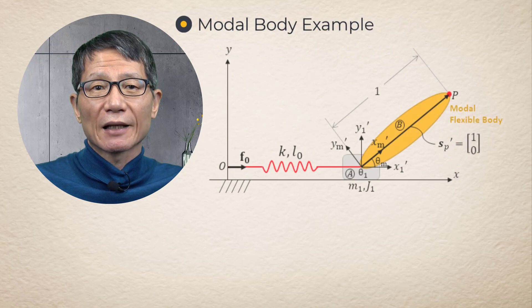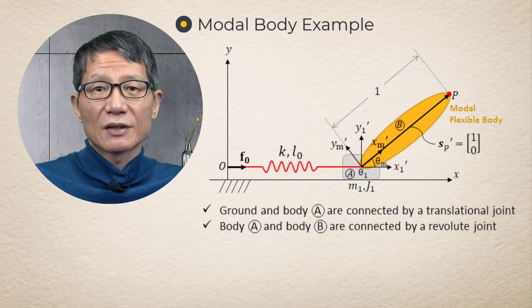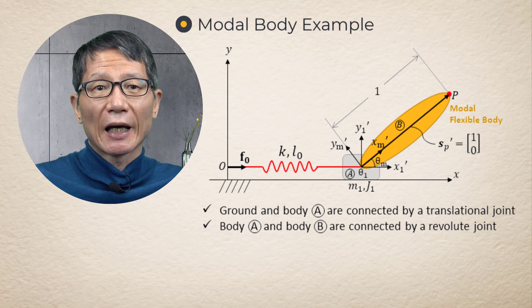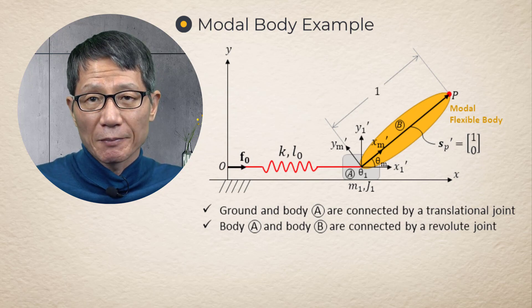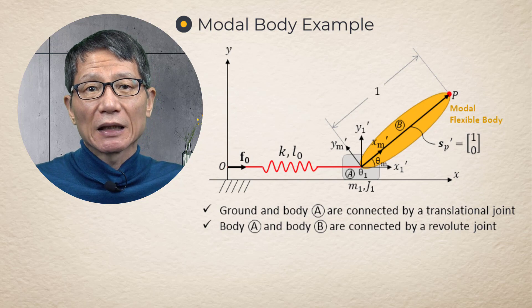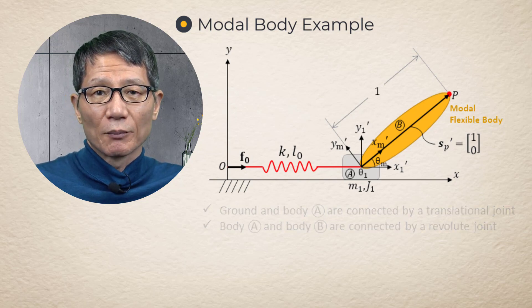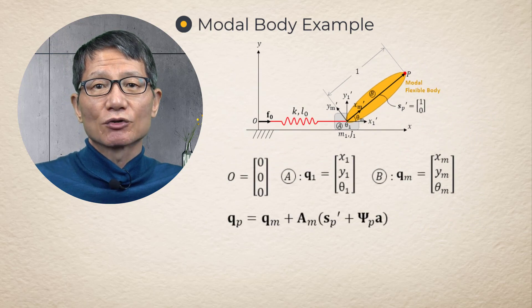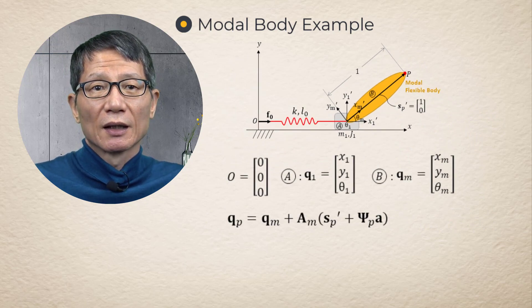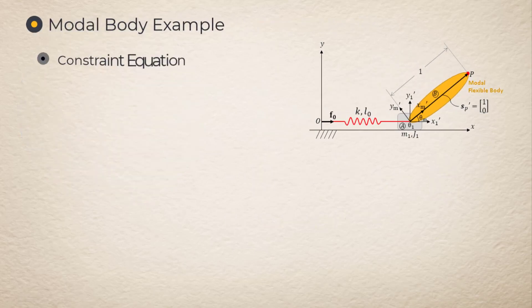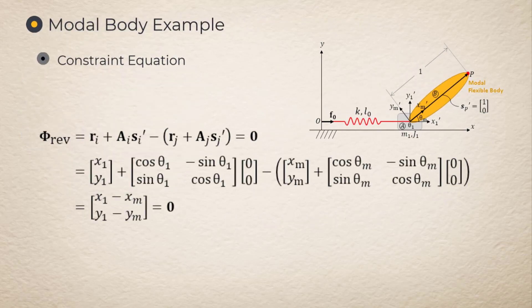Modal body example. Let us consider a two-body system. The system consists of one rigid body and one modal flexible body. The rigid body is connected to the ground by a translational joint. The modal body is connected to the first body by a revolute joint. Since the origin of the body reference frame of the modal body is located at the center of the revolute joint, the constraints for the revolute joint are obtained as follows.